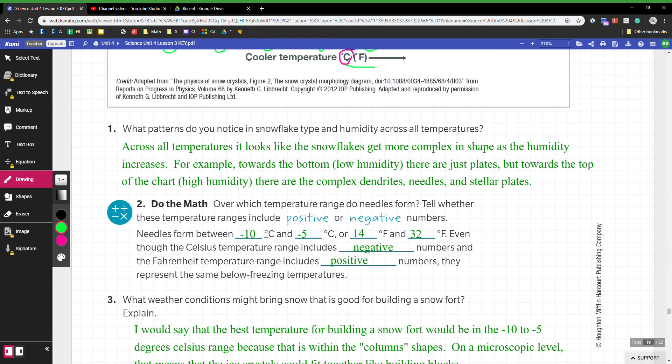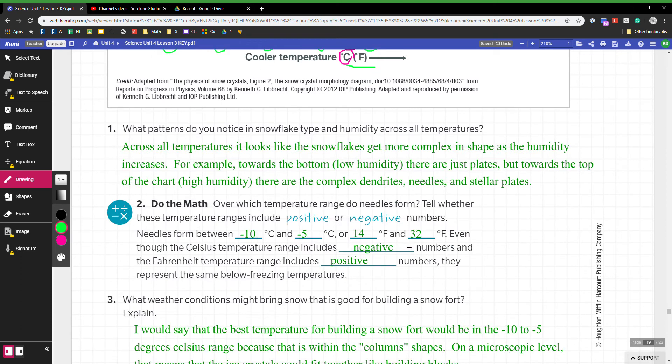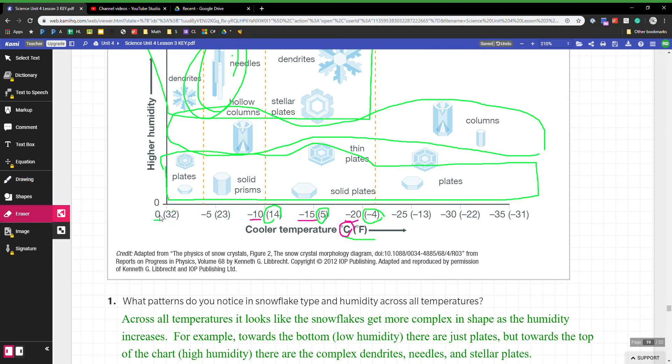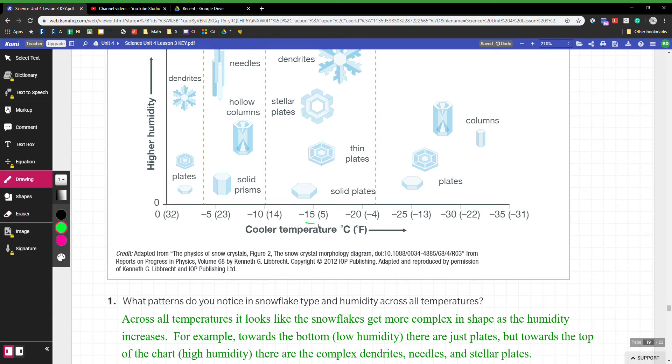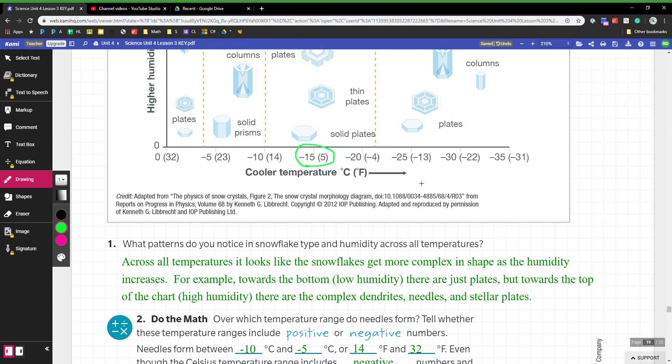Needles form between negative 5 and negative 10 degrees. Here's needles right here, and those are forming between negative 5 and negative 10 degrees in this range. Even though the Celsius numbers range include negative numbers and the Fahrenheit includes positive numbers, they represent the same below freezing temperatures. So even though this Celsius is negative 15 and the Fahrenheit is 5 degrees, these are two totally different scales. They mean the same exact temperature, they just measure temperatures differently using different numbers. Still real cold.